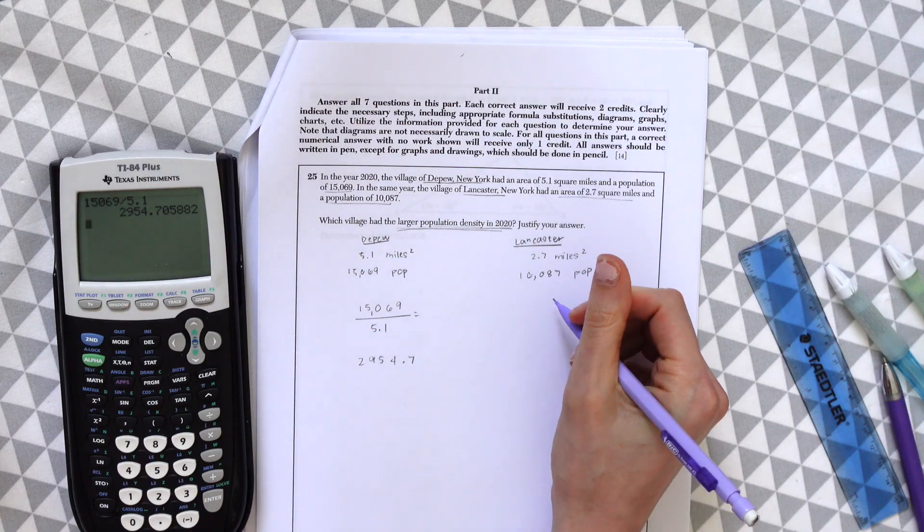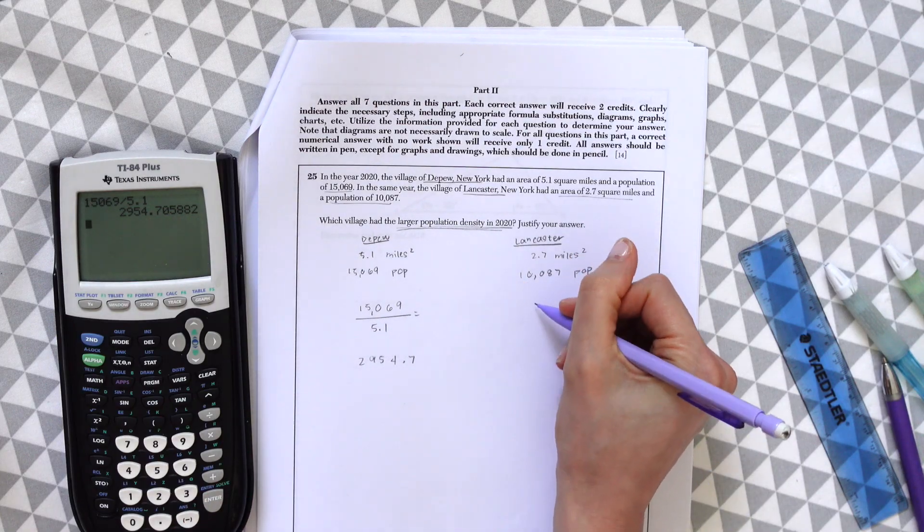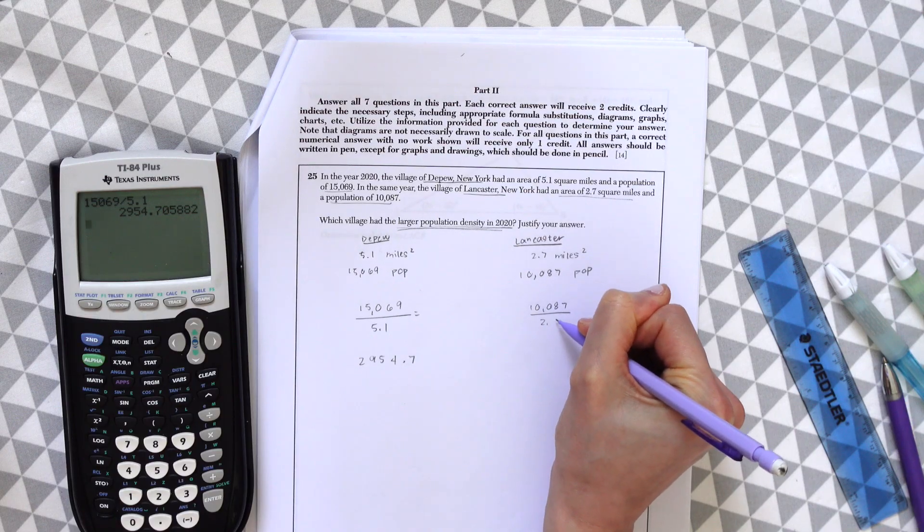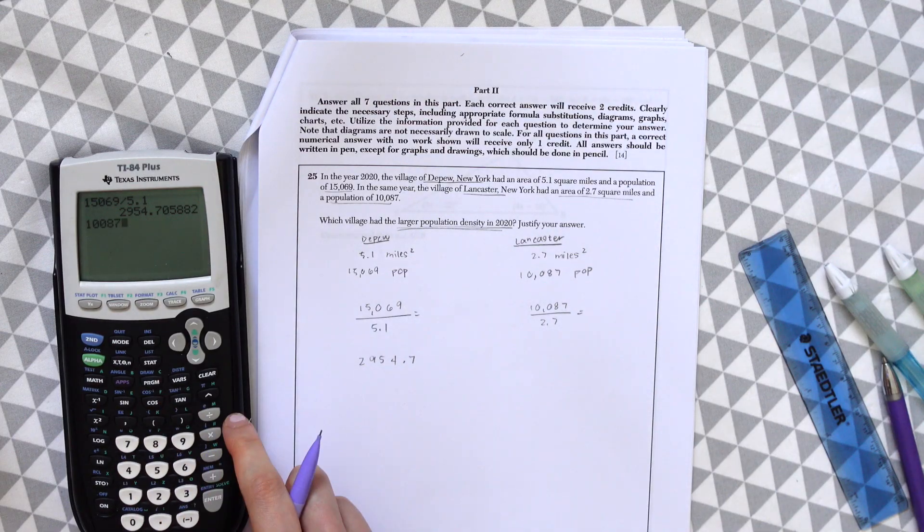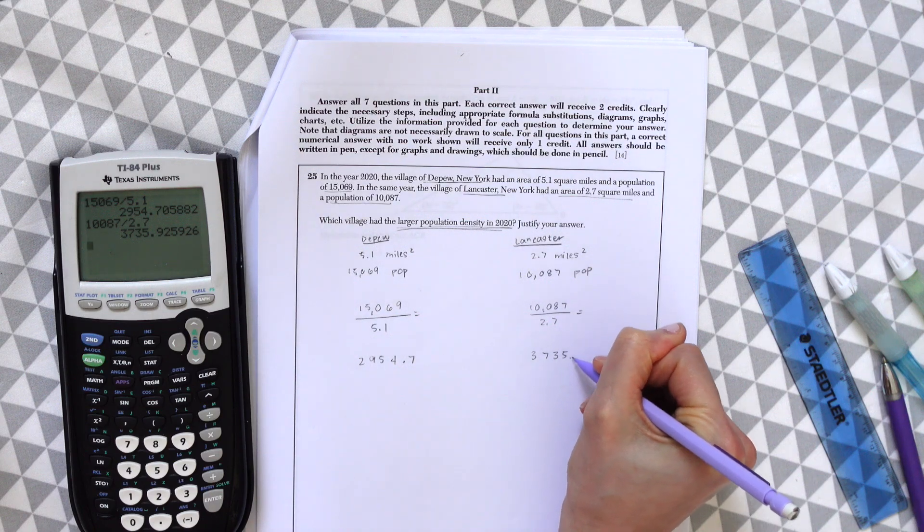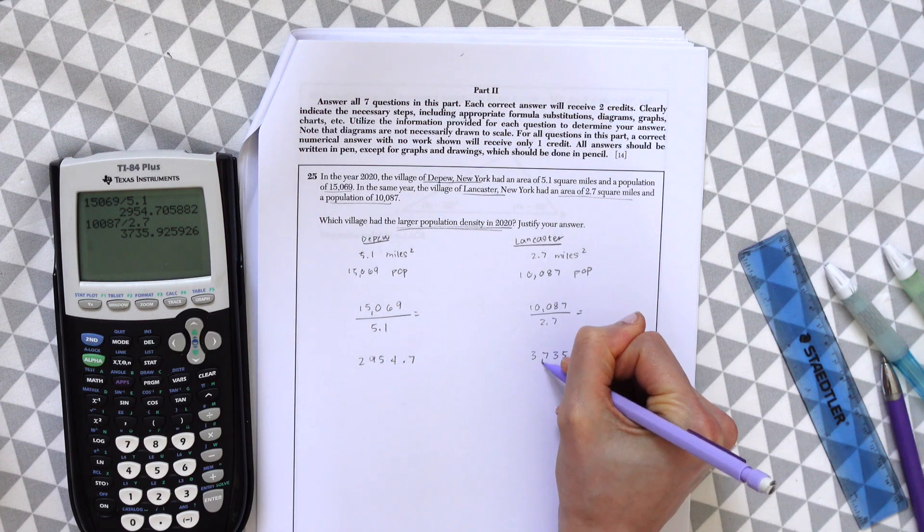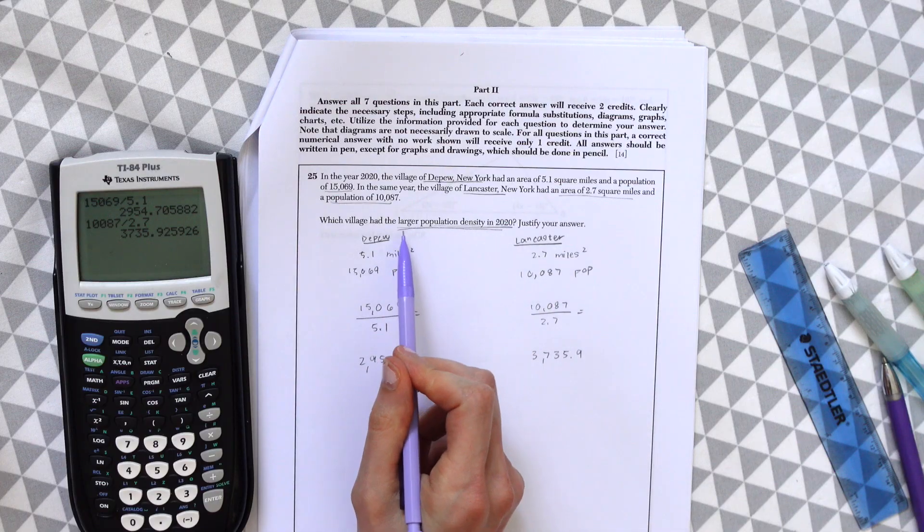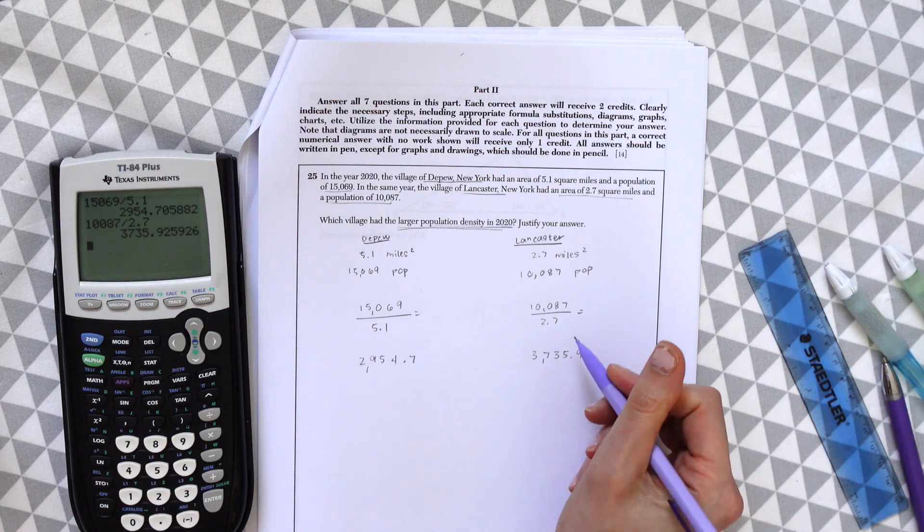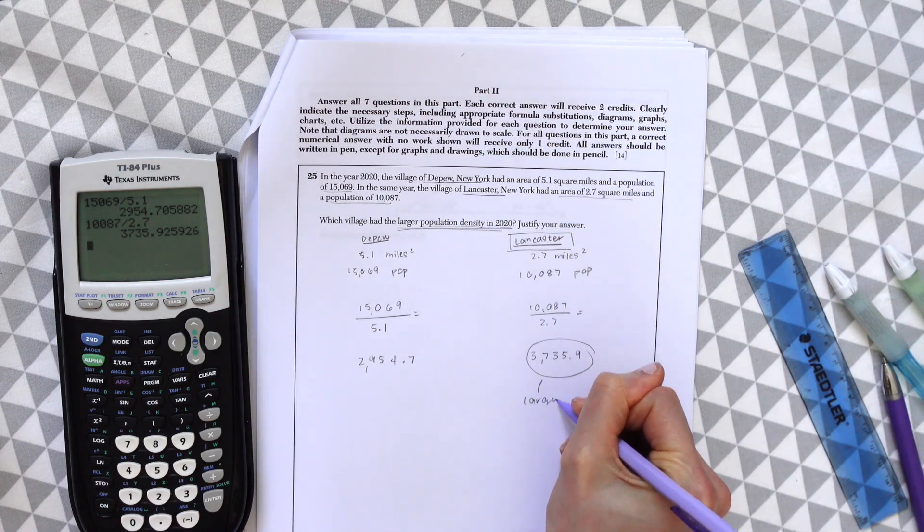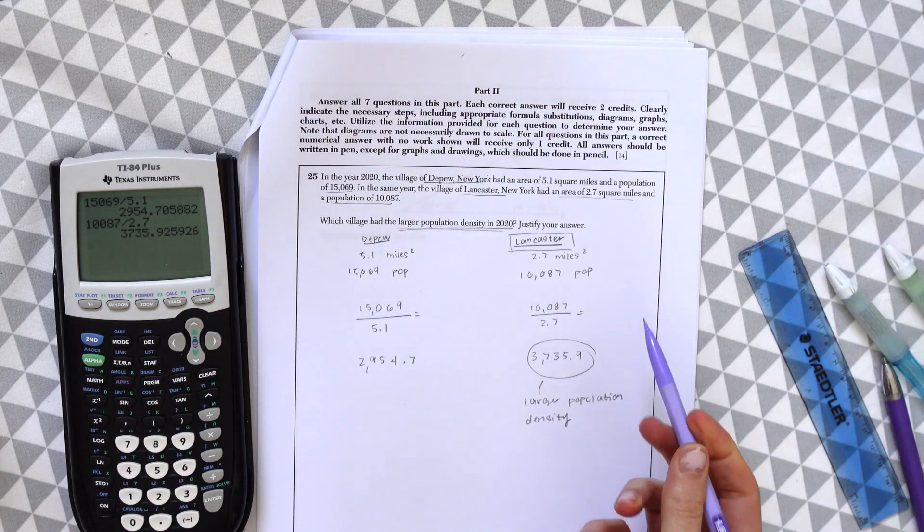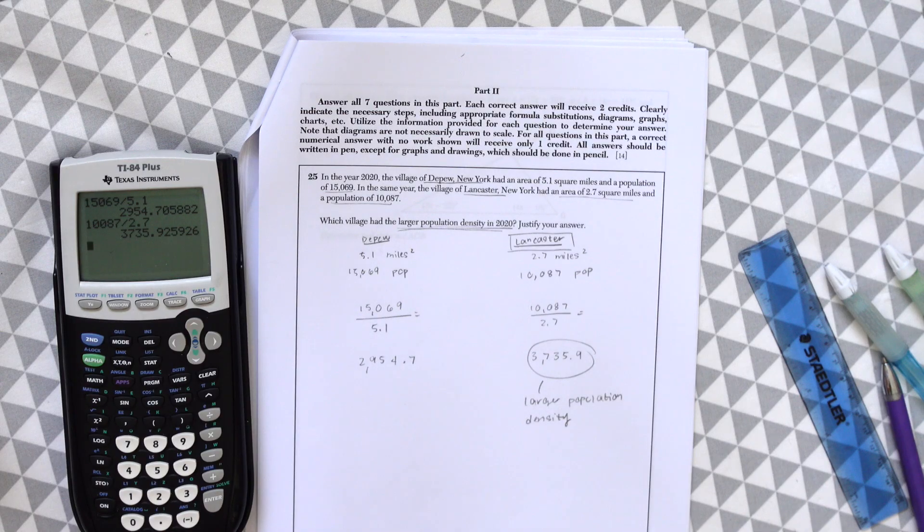And now let's find the density of Lancaster. This is going to be 10,087 divided by 2.7, and this is equal to 3735.9. So now we just need to compare these two. Which has the larger population density? And that would be Lancaster, meaning that there are more people living in a smaller area.